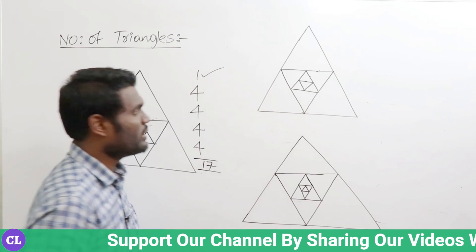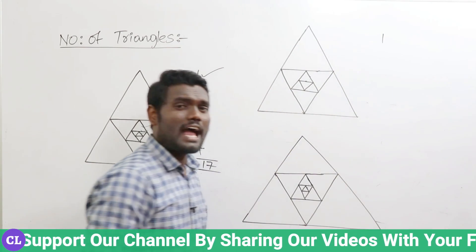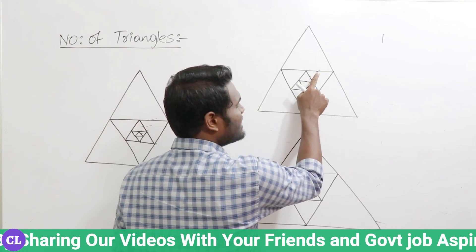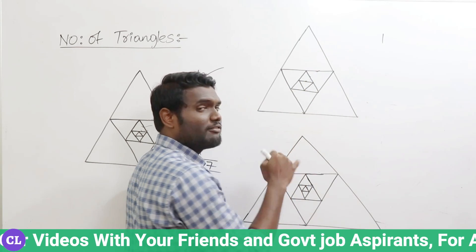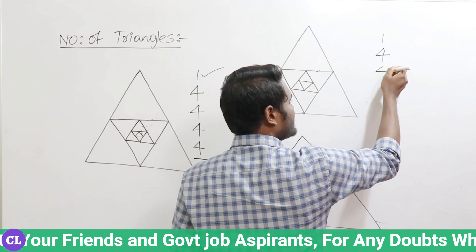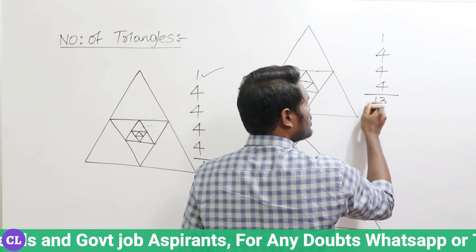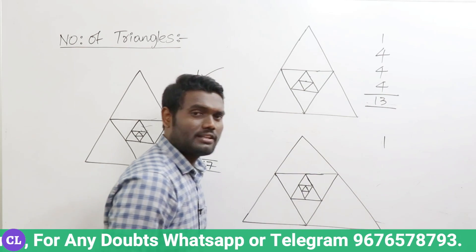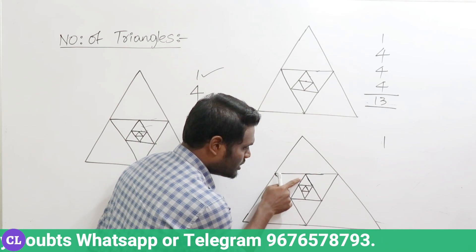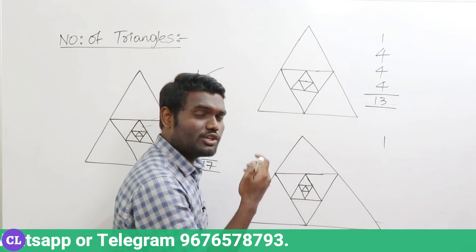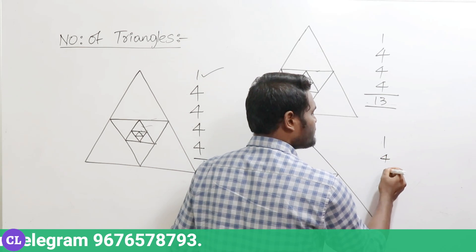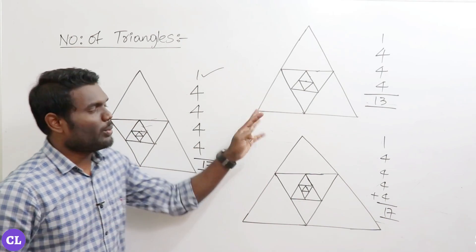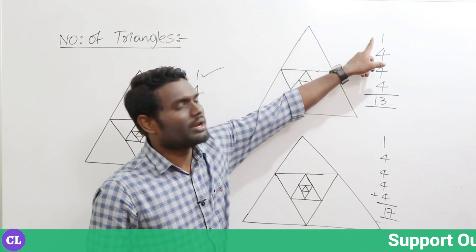For the big triangle I write one. For this figure, how many triangles are inside? One, two, three — as you have three triangles inside, you get three fours extra, so three times four equals twelve, plus one gives thirteen triangles in this figure. Now for this next figure: one, two, three, four triangles inside, so four fours equals sixteen, plus one gives seventeen triangles.